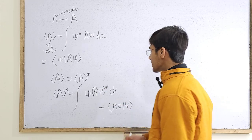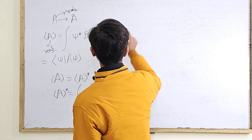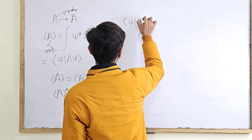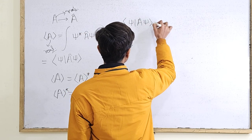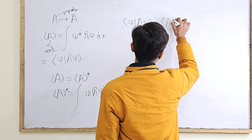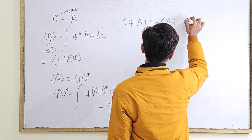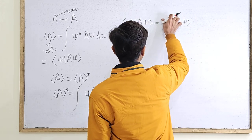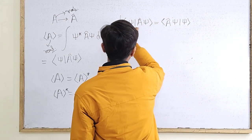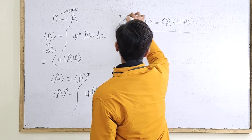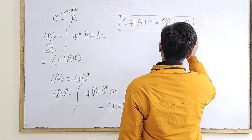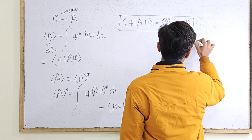Equating these two, we say that the inner product of psi with A-hat psi must equal the inner product of A-hat psi with psi. Operators that satisfy this criterion are called Hermitian operators.